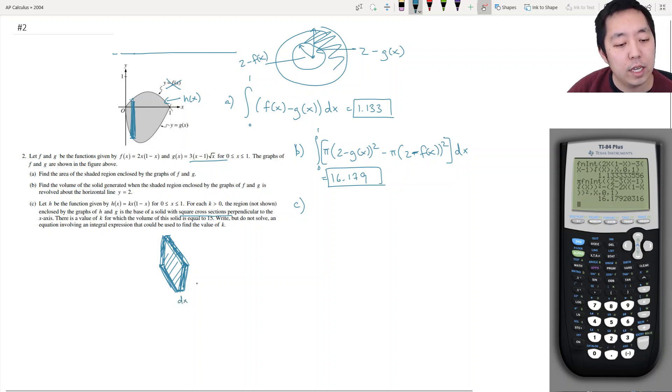Okay. The thickness is dx. The height is h of x minus g of x. And because they're squares, this is also equal to h of x minus g of x. So the volume of this little square prism is going to be [h of x minus g of x] squared, right? That's the area of the square times the thickness, which is dx.